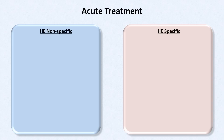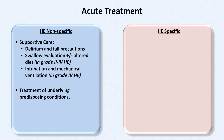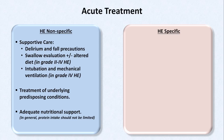For a patient who presents to the hospital with either new onset or an acute exacerbation of hepatic encephalopathy, treatment can be divided into interventions which are not specific for hepatic encephalopathy and those which are. Non-specific care includes supportive measures such as delirium and fall precautions. A swallow evaluation with or without an altered diet is usually appropriate in grades two through four, and grade four patients require intubation and mechanical ventilation. Also treat the underlying predisposing conditions if any can be identified, and provide adequate nutritional support — in general, protein intake should not be limited.